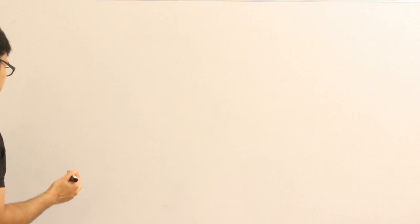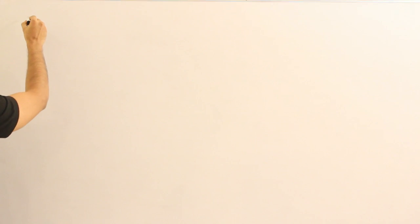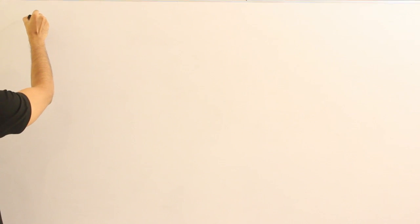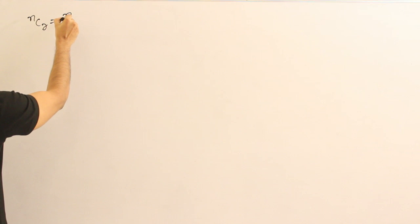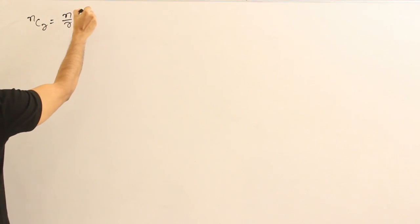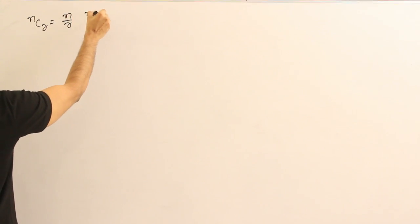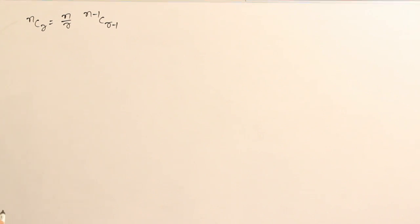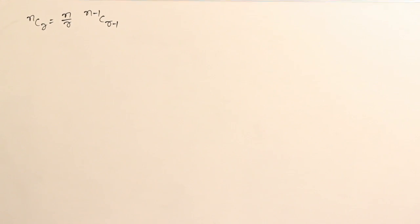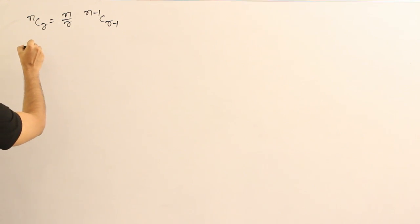One interesting property about NCR is this: NCR is equal to N by R into N minus 1 CR minus 1. You can even see that directly. I should give you one example here.